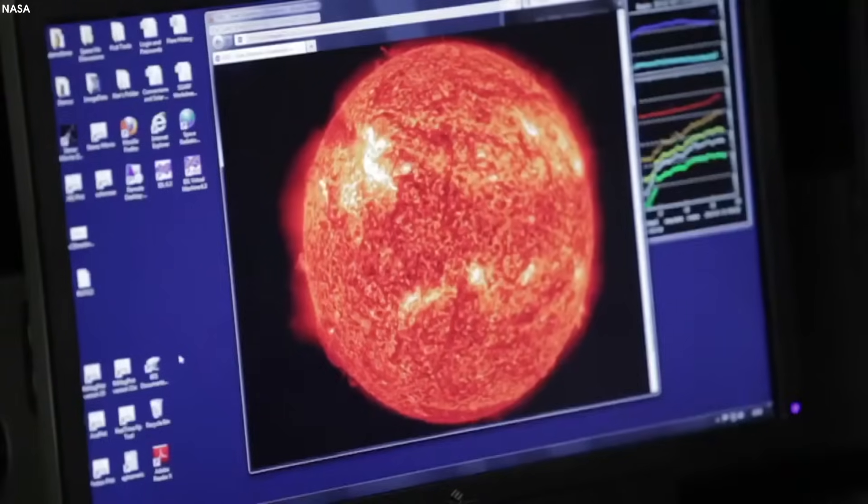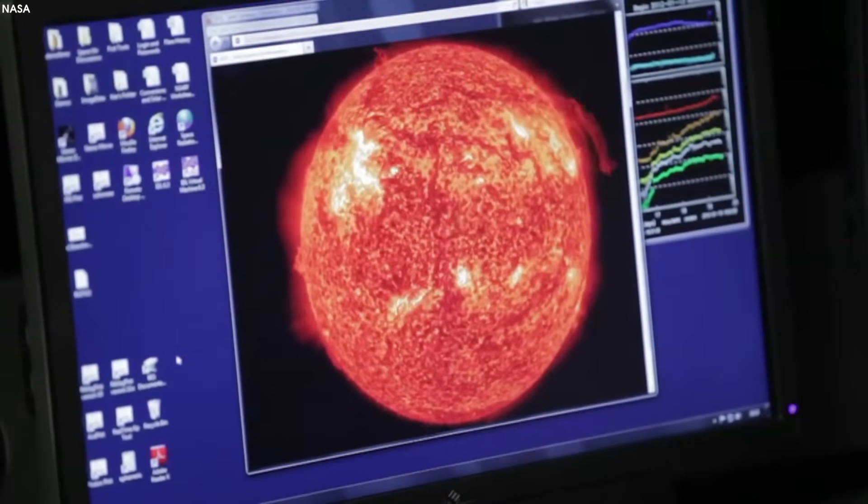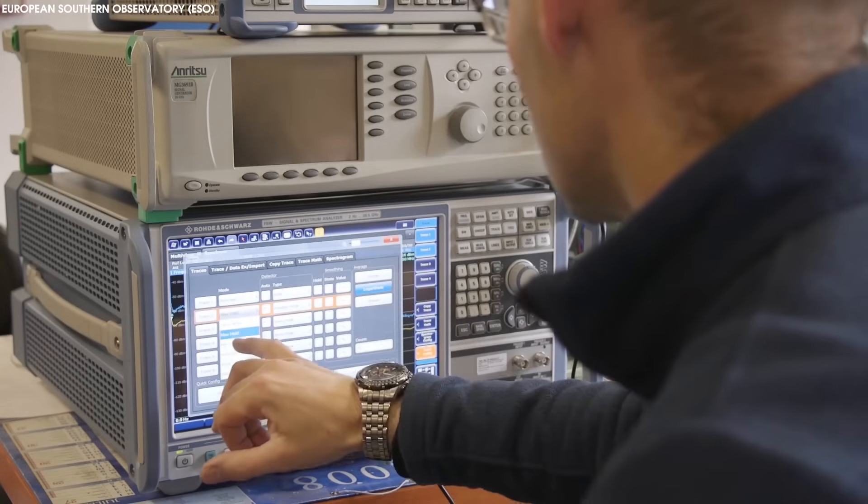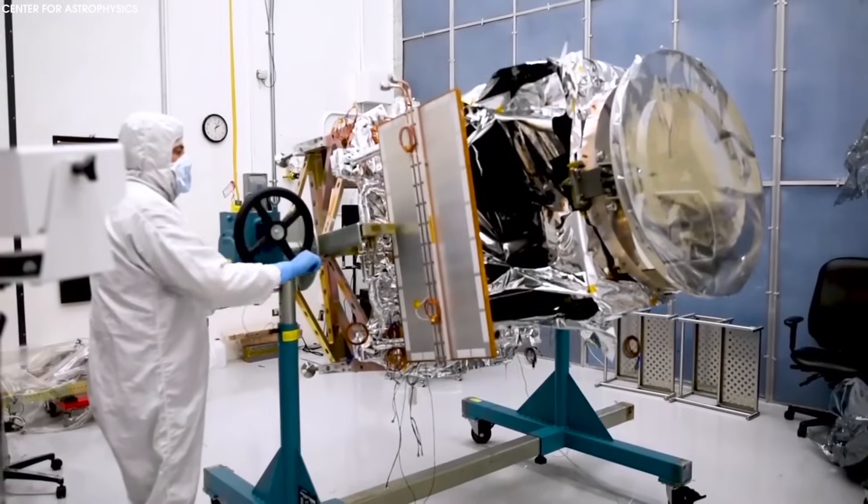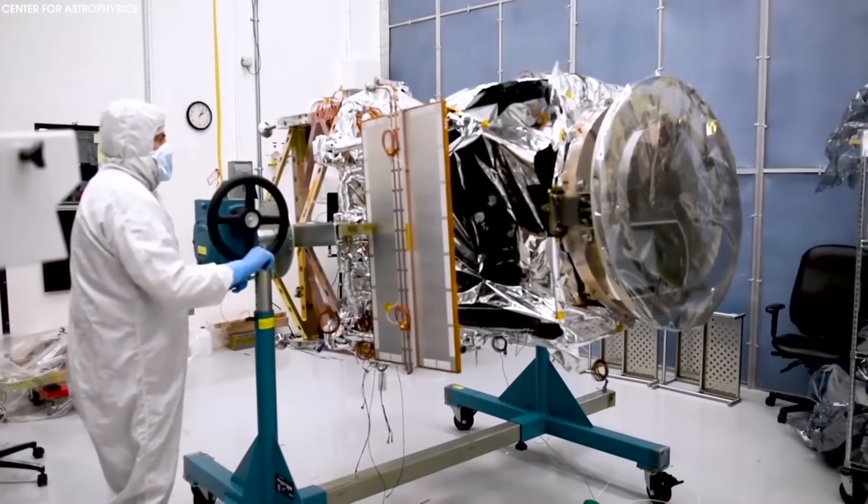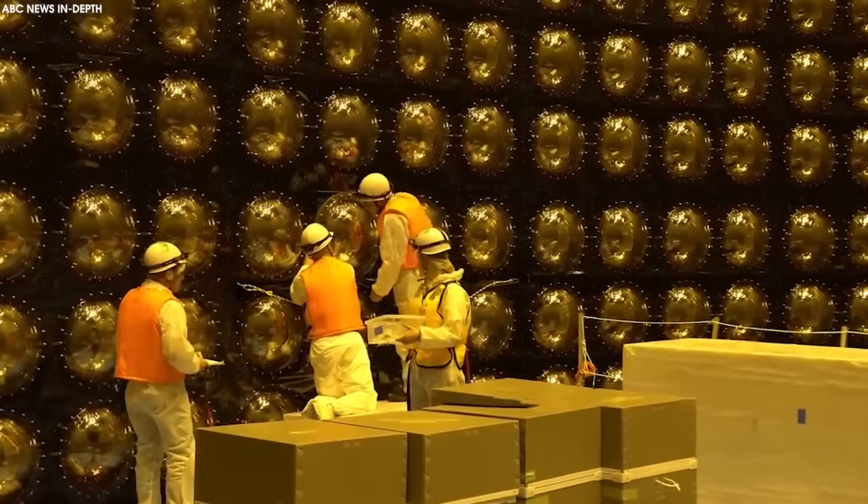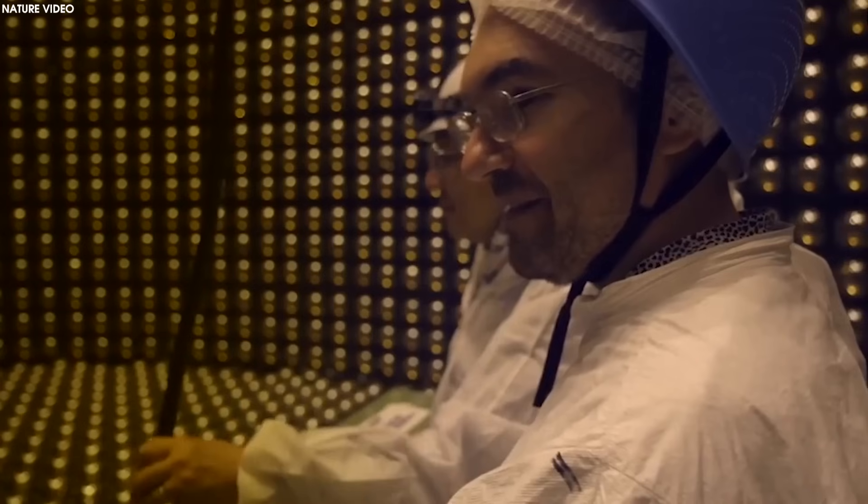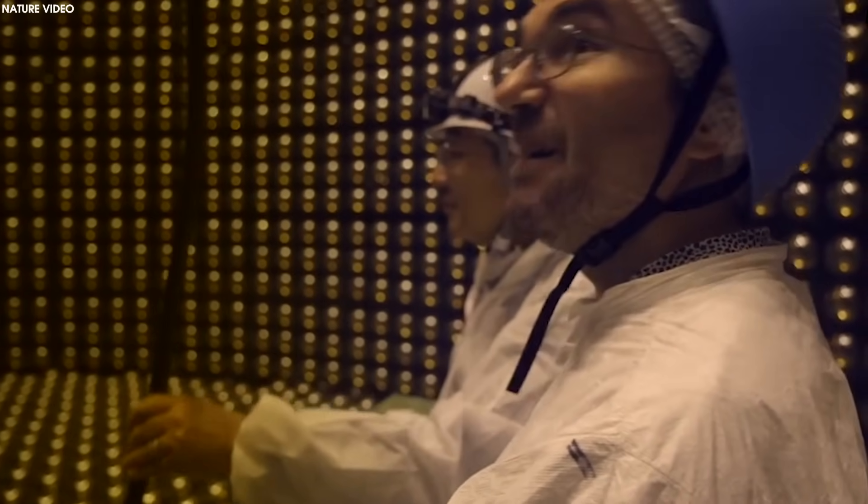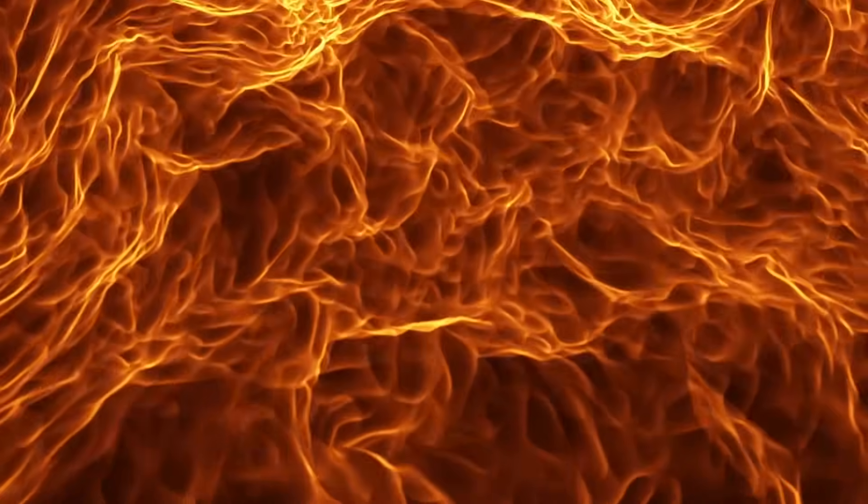In 2024, if Betelgeuse were to go supernova, our first surefire signature would come in the form of high-energy neutrinos flooding our neutrino detectors all over the world in a burst spanning some 10 to 15 seconds. There would literally be millions, perhaps even tens of millions, of neutrinos picked up all at once by these observatories.